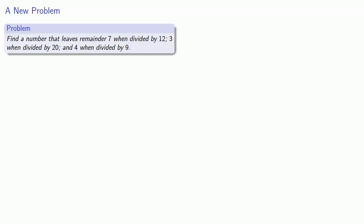So one variation on the Chinese remainder problem is this one. Find a number that leaves remainder 7 when divided by 12, 3 when divided by 20, and 4 when divided by 9.